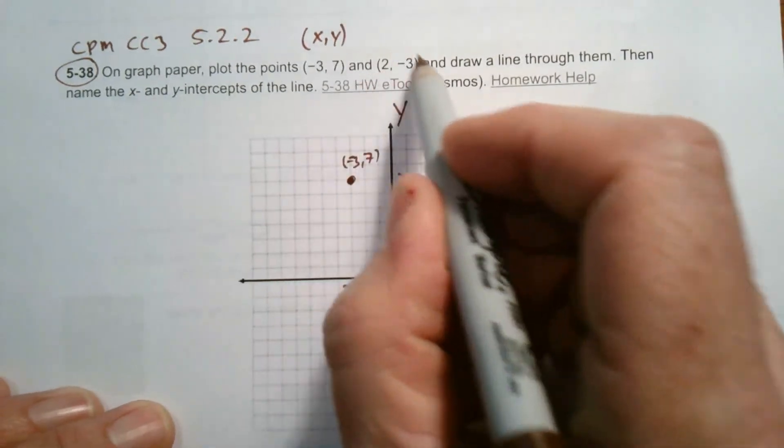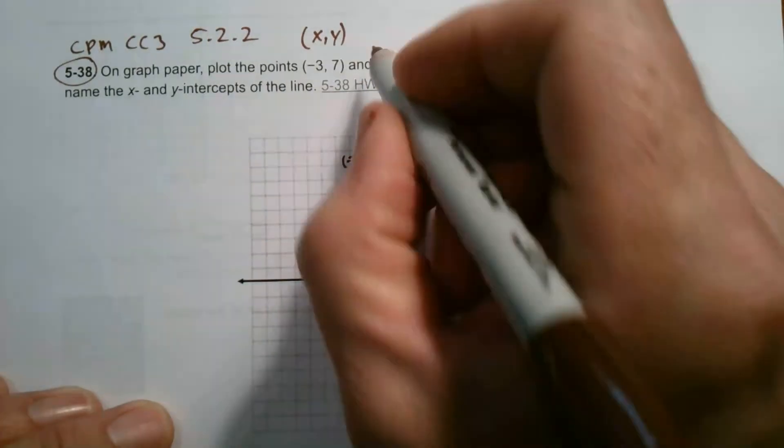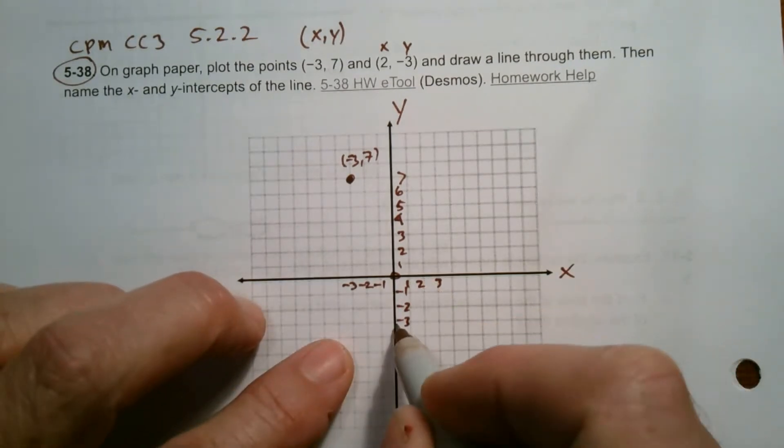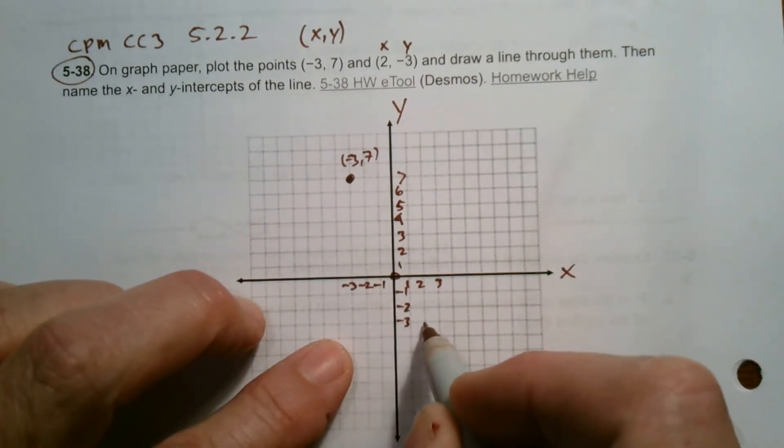All right. So then this one, 2, negative 3. So X is 2. All right. That's my X. That's my Y. X is 2. Y is negative 3. So right here is where Y is negative 3 and X is 2. So they meet at that point there.